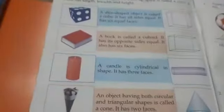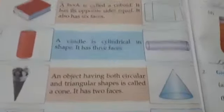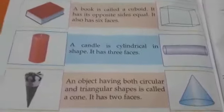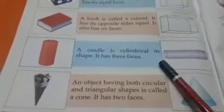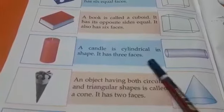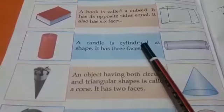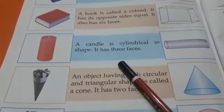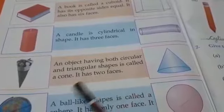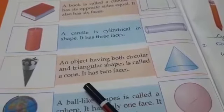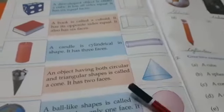A candle is cylindrical in shape. A candle jo hai wo cylindrical shape mein hai. Iski all sides three faces, three faces hain. An object having both circular and rectangle shape is called cone.